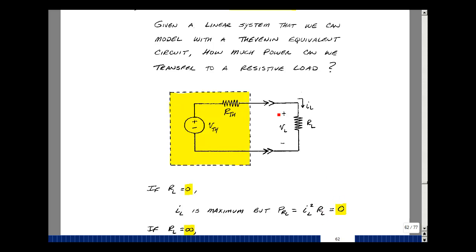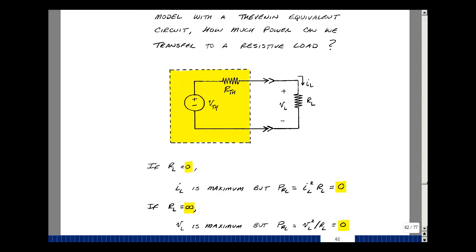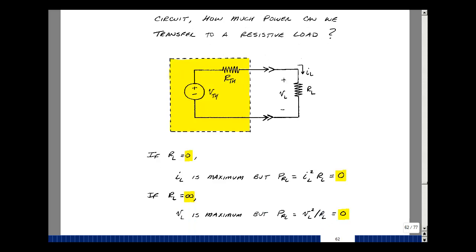To get the most voltage across the load, I'd have an open circuit — in other words, no drop across this resistor, but simply V sub L equals V Thevenin. But the power out is the voltage across the load, which would now be V Thevenin squared divided by R sub L. But if R sub L is an open circuit, then we're talking about zero power again.